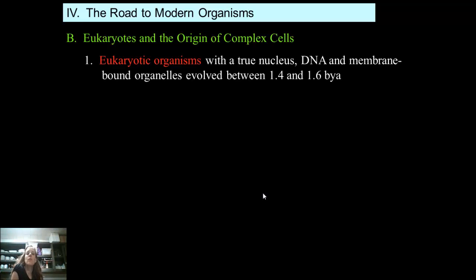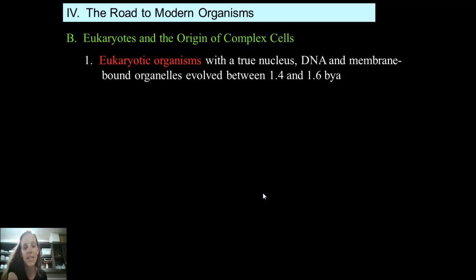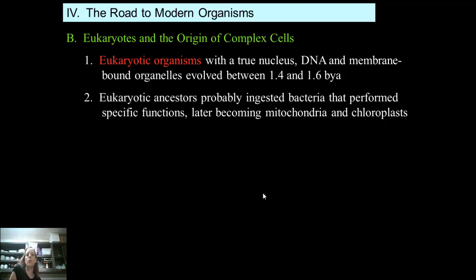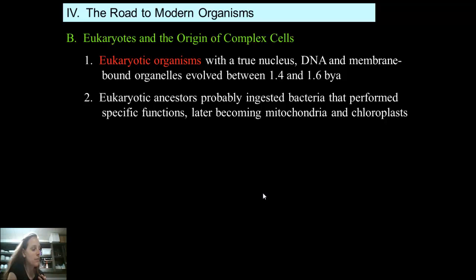Eukaryotic organisms are organisms that have a true nucleus, they have DNA instead of RNA, and they also have membrane-bound organelles inside the cell. Eukaryotic organisms began to evolve about 1.4 to 1.6 billion years ago. Eukaryotic ancestors probably ingested bacteria that performed specific functions, which later became mitochondria and chloroplasts — the powerhouses of the cell where all the energy a cell needs is made. Mitochondria are for animal cells; chloroplasts are for plant cells. This theory is known as the endosymbiosis theory.